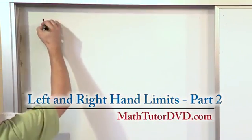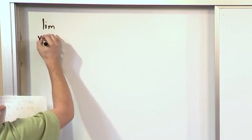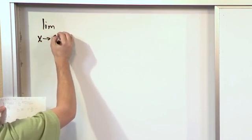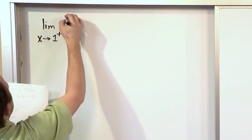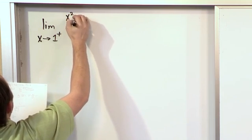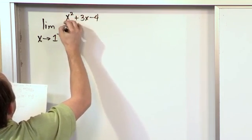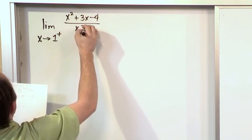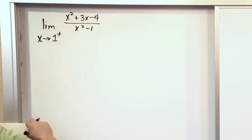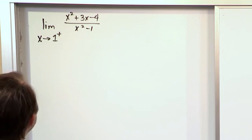If we had the limit as x approaches 1 from the right, that's what that means, of the function x squared plus 3x minus 4 over x squared minus 1. This is the function that we're trying to take the limit of.